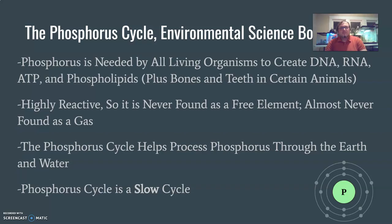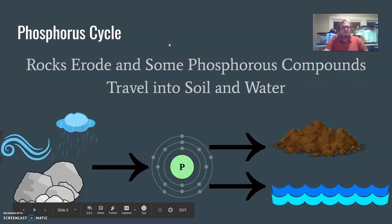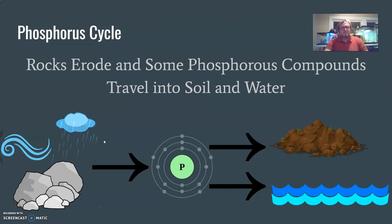The phosphorus cycle helps process phosphorus through the earth and water. It is a slow cycle, similar to the slow carbon cycle — it takes a very long time for these minerals to form. Rocks erode and some phosphorus compounds travel to soil and water, driven by wind or rain breaking down rocks that have phosphorus minerals inside of them.